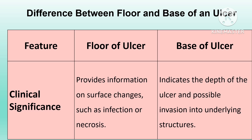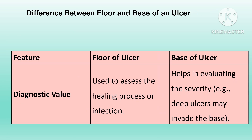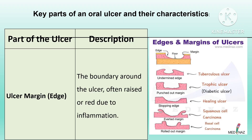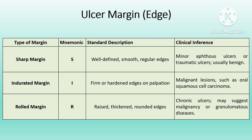The floor of the ulcer is the area in direct contact with the external environment, while the base lies beneath and includes deeper tissues like connective tissue or bone. The margin or edge is the surrounding boundary of an ulcer, often slightly raised due to inflammation. It is very important to identify the type of margin to classify oral ulcers.